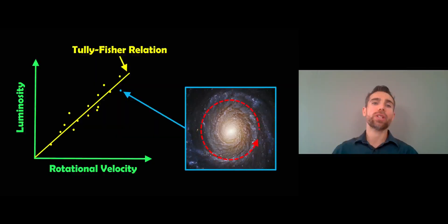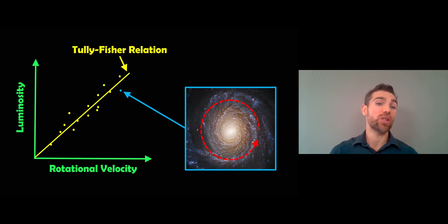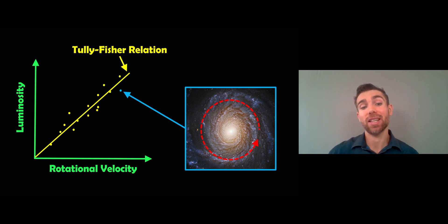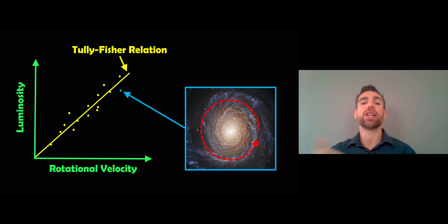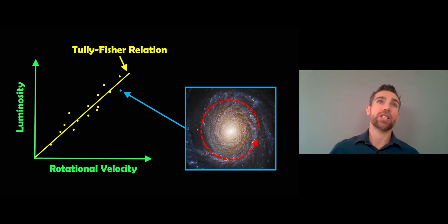Welcome to this video where I wanted to have a look at the Tully-Fisher relation for spiral galaxies. It's a relationship between the luminosity or mass of the galaxy and also its rotational velocity, and you get this kind of relation here. It can be very useful for finding distances — fairly large distances in the universe — so for very distant galaxies you can use this relationship.